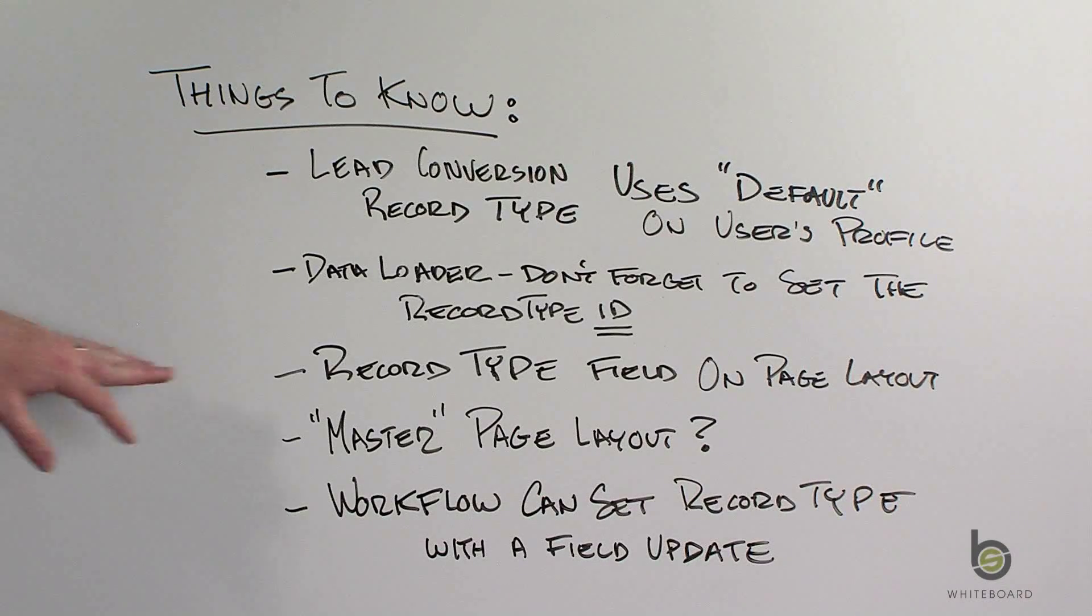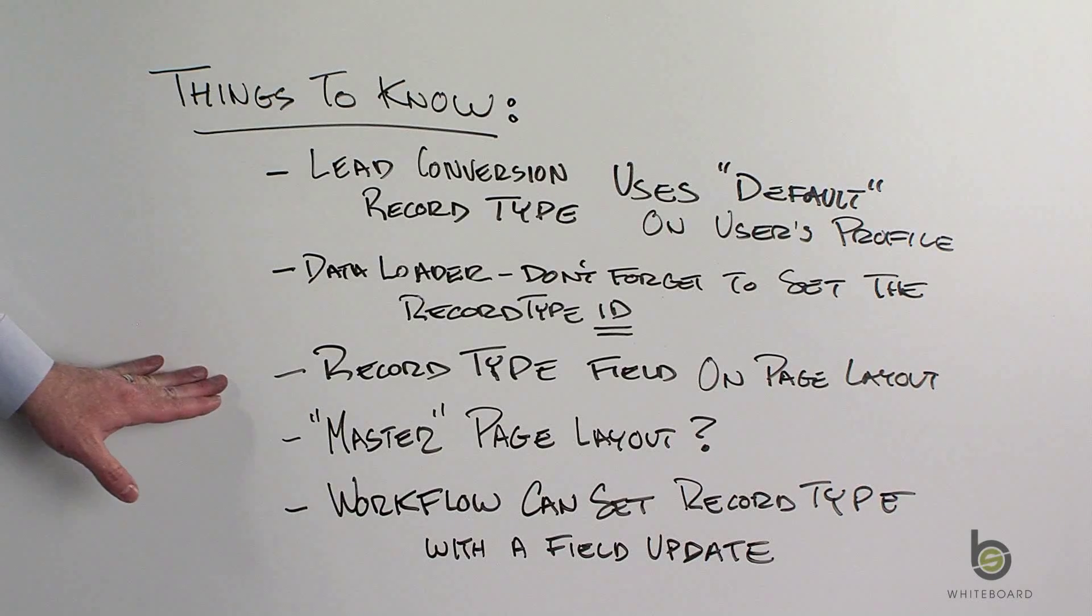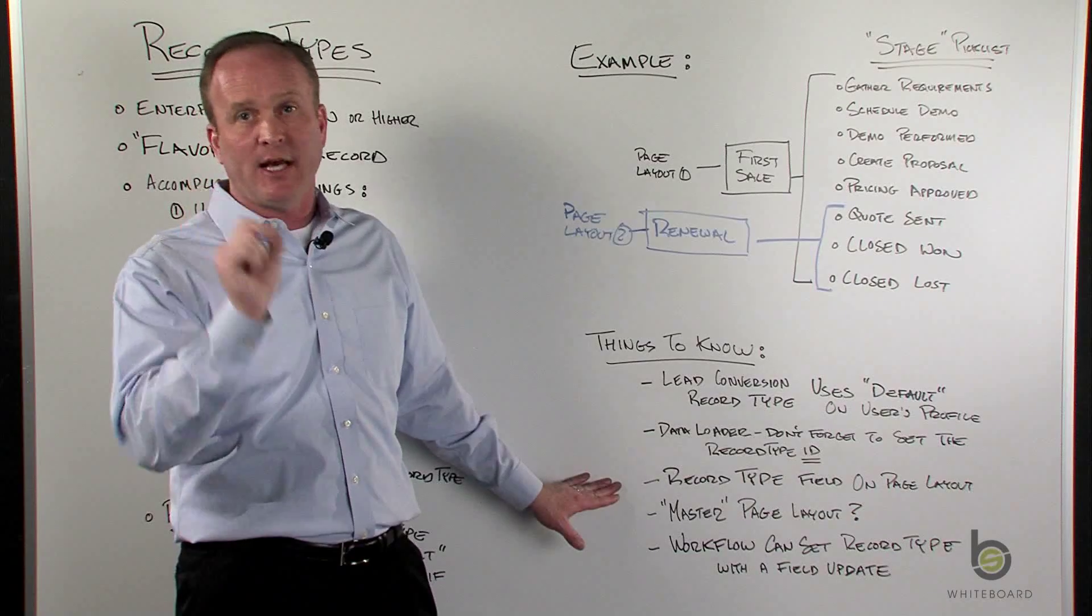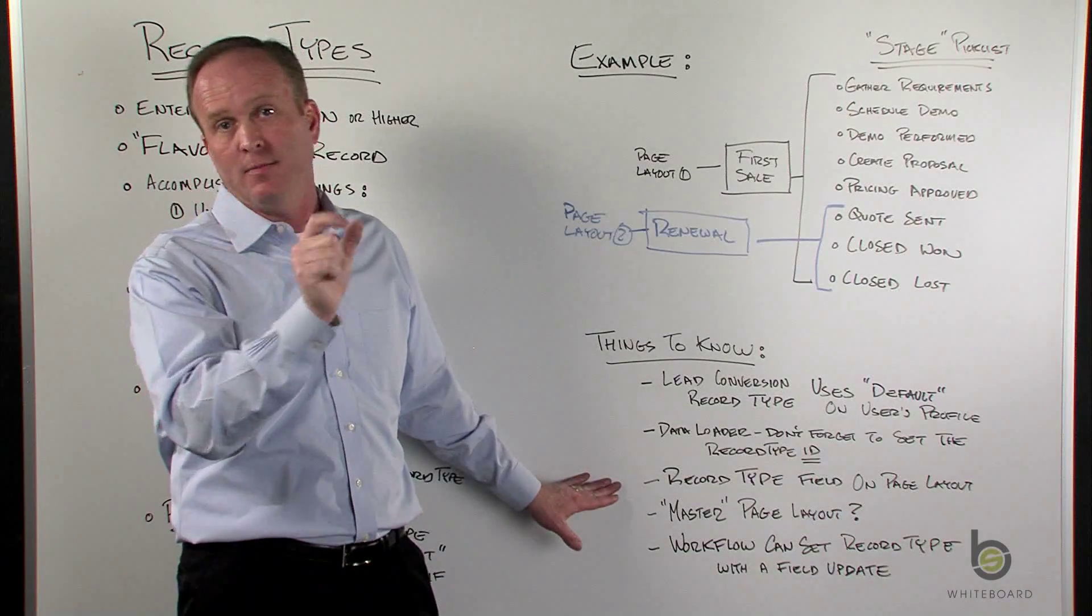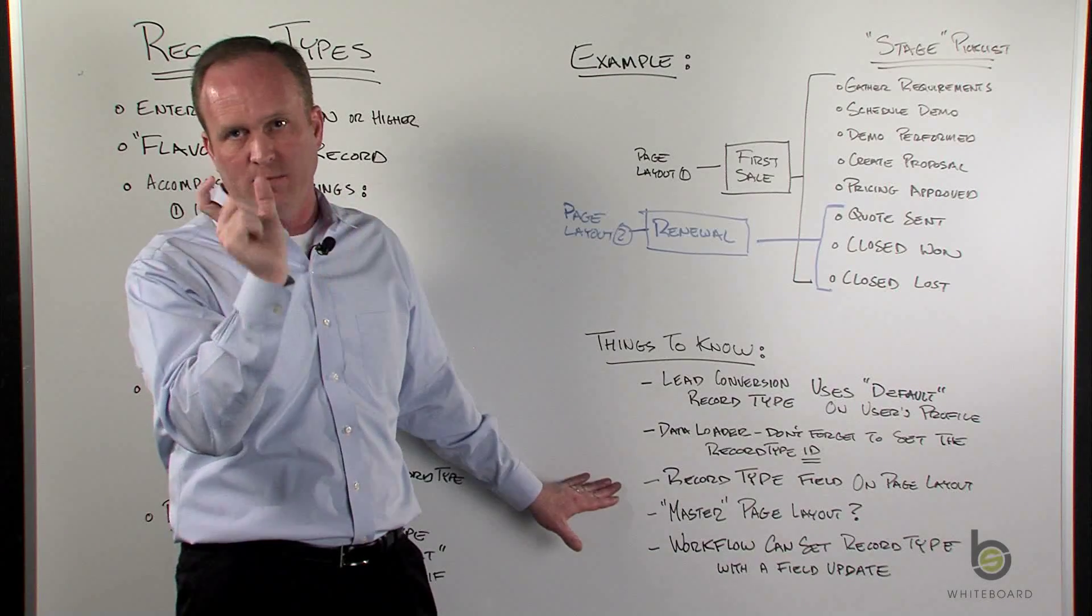The next thing is when you have multiple record types enabled for an object, you have a record type field that you can put on a page layout. So if you're doing the page layout editor, it could be account record type, lead record type, it's usually the name record type. You can drag that onto the page layout.